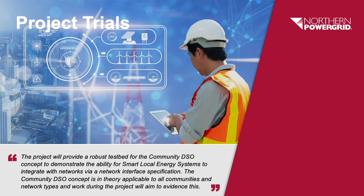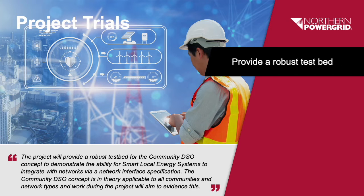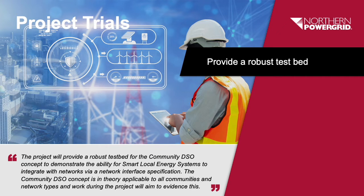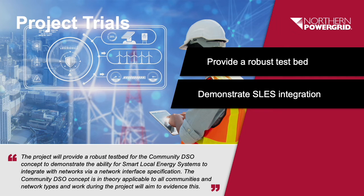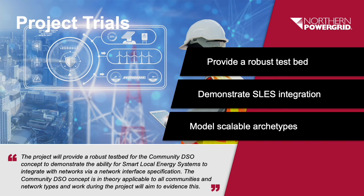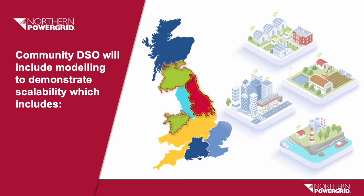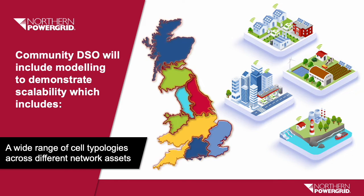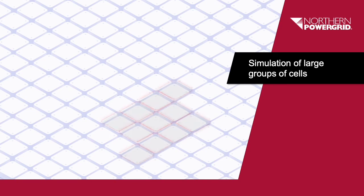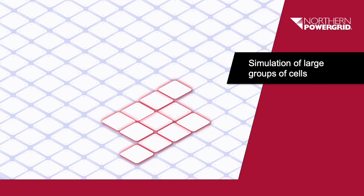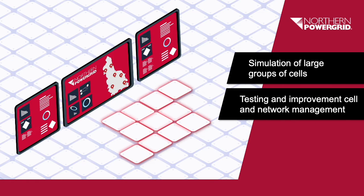The project will provide a robust testbed for the Community DSO Concept to demonstrate the ability for smart local energy systems to integrate with networks via a network interface specification. The Community DSO Concept is in theory applicable to all communities and network types, and work during the project will aim to evidence this. Community DSO will include modelling to demonstrate scalability, covering a wide range of cell typologies across different network assets, simulations of large groups of cells to demonstrate efficient management at different levels in the cellular hierarchy, and testing improvements to cell and network management drawing on trial outcomes with a wider range of operational parameters.